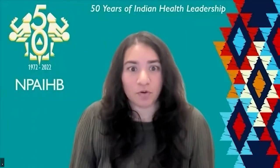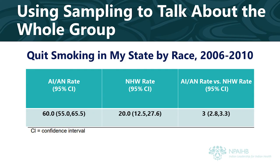An important topic to learn about when it comes to interpreting health data is confidence intervals. But before we can talk about confidence intervals, we have to briefly talk about sampling. Sometimes we don't have the ability to get health data from every single person in a group, so we take a sample. We try to make sure that the data sample we take is representative of the whole group, then use the sample to attempt to understand the whole group. For instance, in this table about rates of those who quit smoking in my state from 2006 through 2010, the data used to determine the rates was based on a sample.